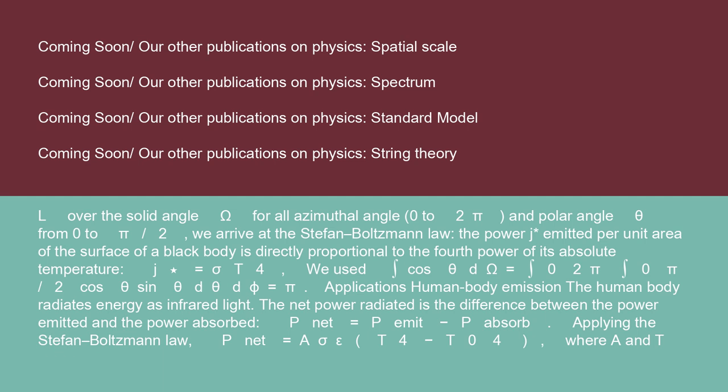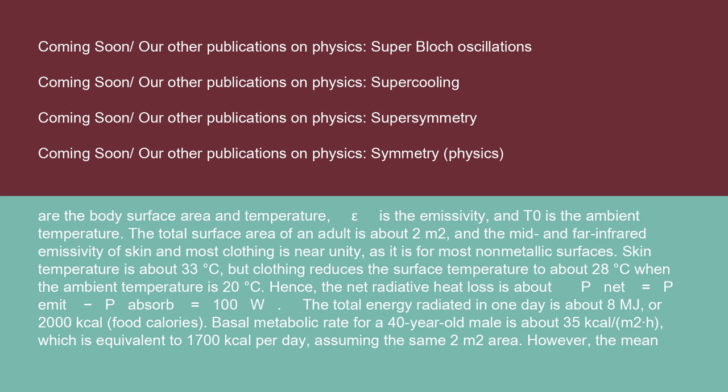Applications: Human body emission. The human body radiates energy as infrared light. The net power radiated is the difference between the power emitted and the power absorbed: P_net = P_emit − P_absorb. Applying the Stefan-Boltzmann Law: P_net = Aσε(T⁴ − T₀⁴), where A and T are the body surface area and temperature, ε is the emissivity, and T₀ is the ambient temperature.